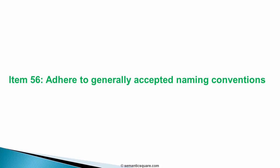Here is item 56 from Effective Java, which is dedicated to naming conventions. We will look at most of its suggestions. It stresses on sticking to generally accepted naming conventions. The item talks about two aspects of naming — one is typographical and the other is grammatical — and we will look at both of them.